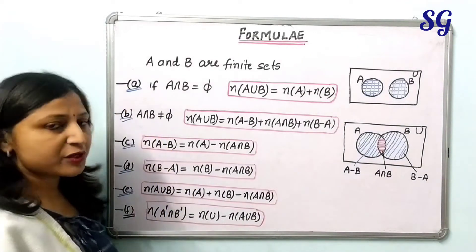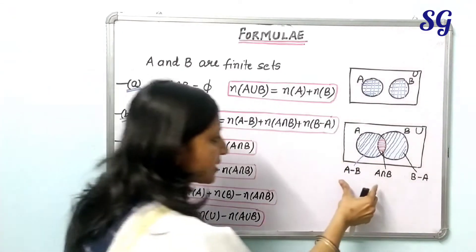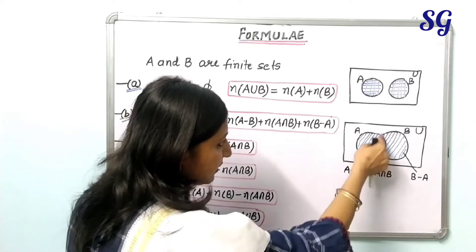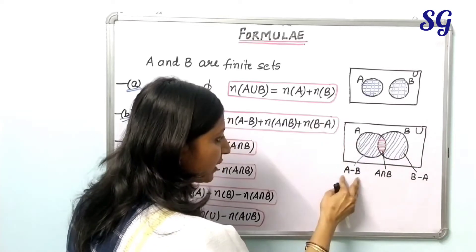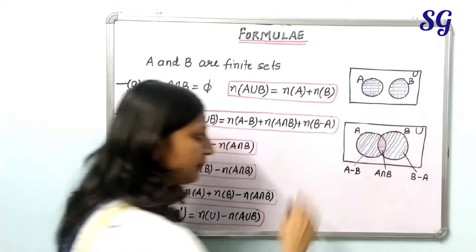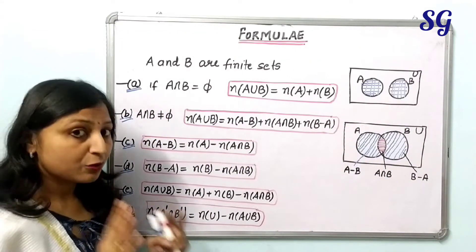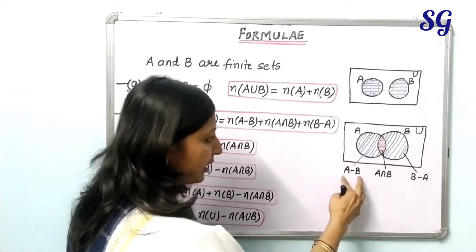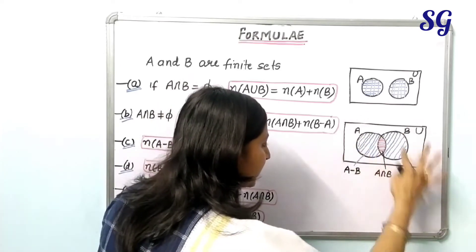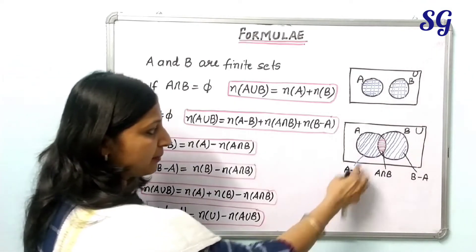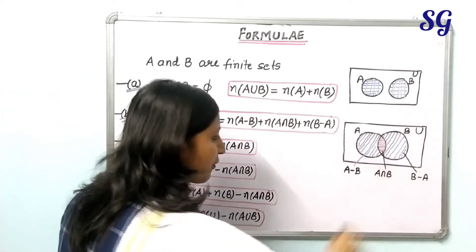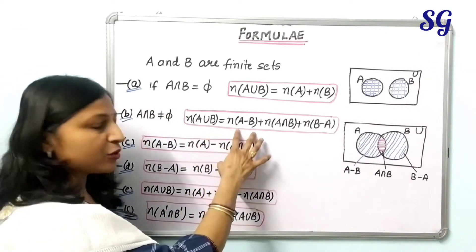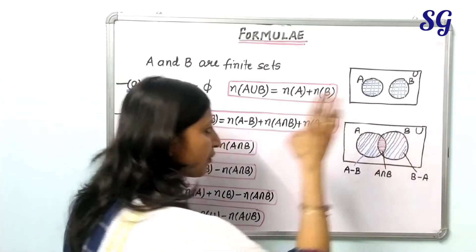Second formula: if A intersection B is not empty — meaning there is some common part — then the number of elements in A union B equals the number of elements in A minus B, plus the number of elements in A intersection B, plus the number of elements in B minus A. The red portion shown represents A intersection B, the blue region represents A minus B, and similarly there is B minus A.